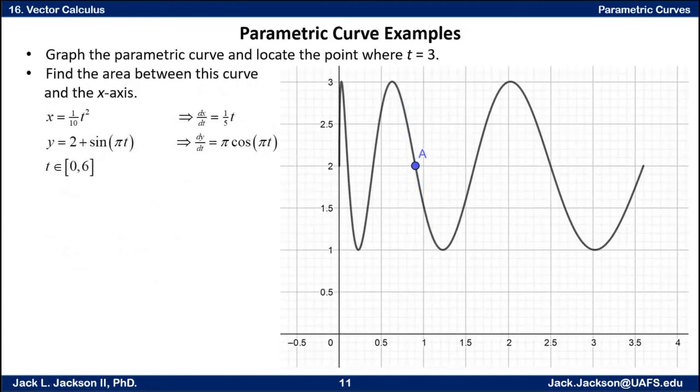How about the next thing? What about find the area between this curve and the x-axis? One way to do this would be to eliminate the parameter. Here x is one-tenth t squared, and on these values of t, x is positive. So we could solve for t: multiply by 10, take the square root, t is the square root of 10x. Put that in place of t here, now you got y as a function of x. Do it just like you would have done in Calc 1: integrate that from the minimum x to the maximum x. But let's see if we can do it with parametric equations directly.